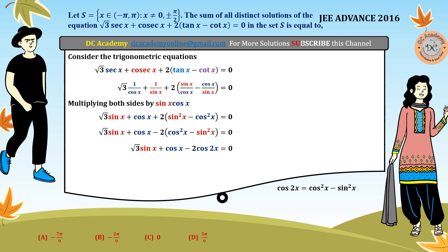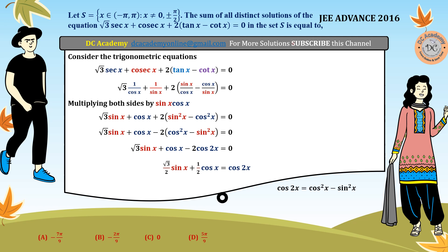Now we divide all terms by 2, so we get root 3 by 2 times sine x plus 1 by 2 times cos x equals cos 2x. We do this because to solve a trigonometric equation, we need it in the form cos x equals cos alpha or sine x equals sine alpha, and then we can apply the general trigonometric solution.